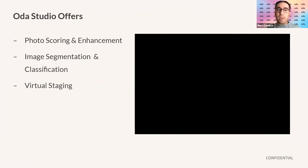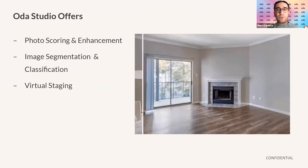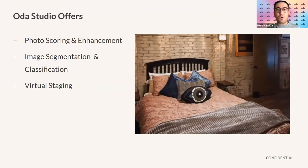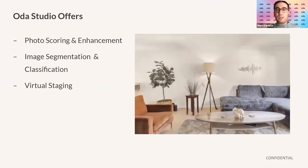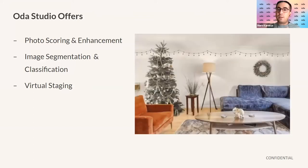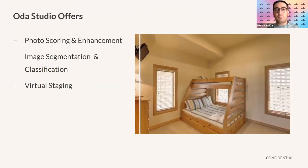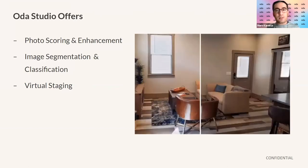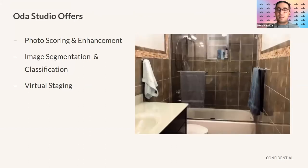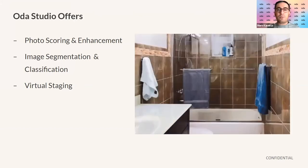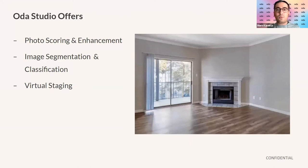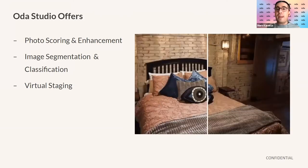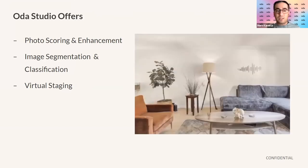The other tool we have is the image segmentation and classification tool, which automatically recognizes the content of photos, including whether the photo is a bathroom, living room, or kitchen, as well as the specific objects contained within that photo — like a microwave, an oven, or a pool. We take all that information and make it accessible so you can organize these photos better.